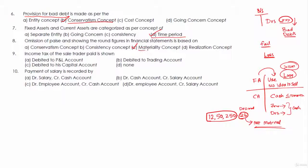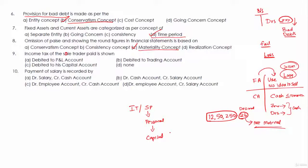Next: income tax of the sole trader paid — is it debited to P&L account, trading account, his capital account, or none? Income tax of a sole proprietor is his personal expense, and that will reduce his capital only. Capital will come down because the profits are used by him for paying income tax. So we can say it will be debited to his capital account — when the capital account is reducing, it is debited.